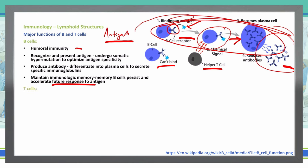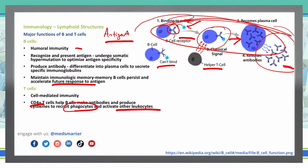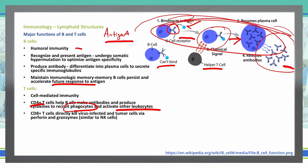Let's continue on and discuss T cells. T cells are cell-mediated immunity. We're going to see CD4 T cells that come in and help our B cells make antibodies and produce cytokines that will recruit phagocytes and other leukocytes. Our CD8 T cells actually go in and kill virus-infected cells and tumor cells using the same perforin and granzymes similar to our natural killer cells.